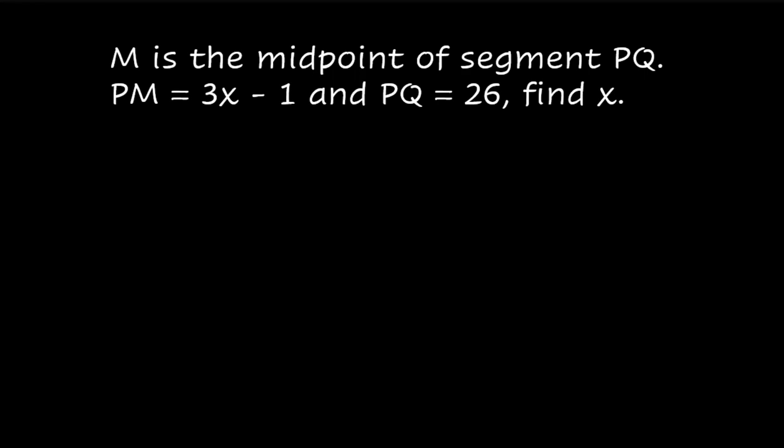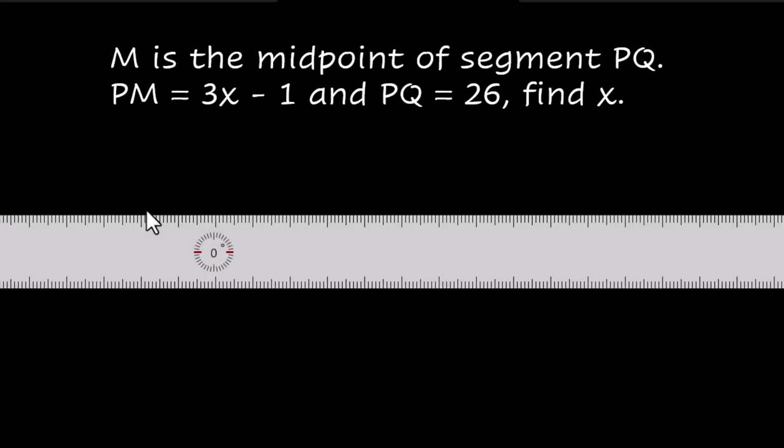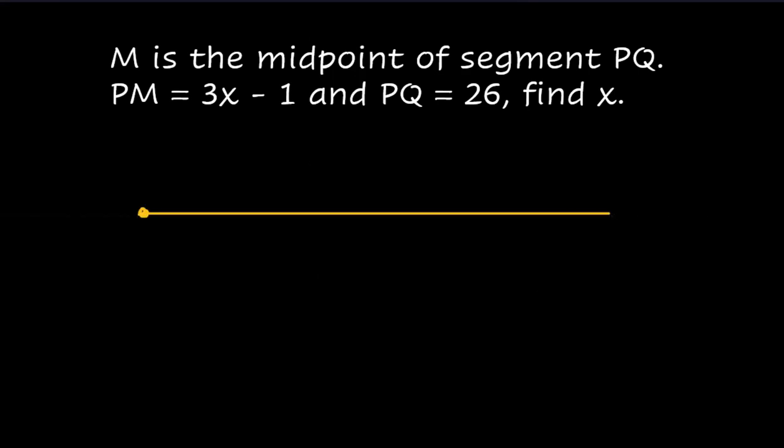M is the midpoint of segment PQ, so we need to draw the segment. And this would be P, and a dot here, and that would be Q. And somewhere in the middle, we have another point M. And they are literally telling us that that's the midpoint, which means we know that this piece and this piece are congruent. They are the same length. They are equal to each other.